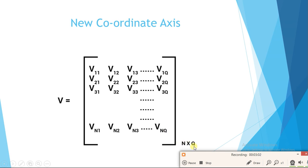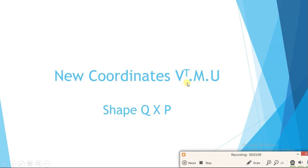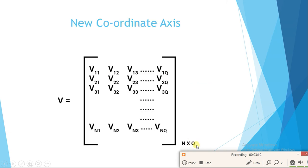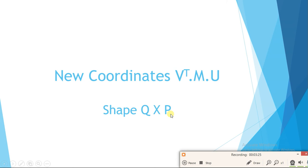We find new coordinates using both vectors: new coordinates = V_transpose × M × U. We know M dot U has dimension n×p for a single image, and V_transpose is q×n, so q×n times n×p gives q×p — which is very much less than n×n. This means we reduce dimension in both row and column directions simultaneously. We do this for all t images, getting a reduced dimension far smaller than 2D PCA, with better results.